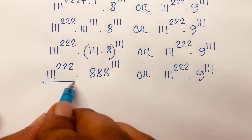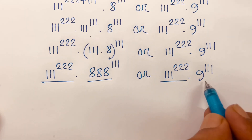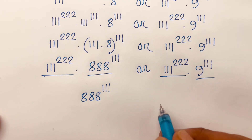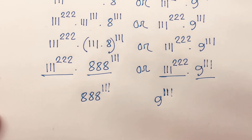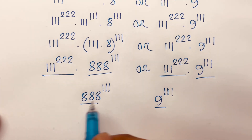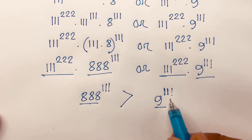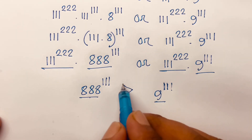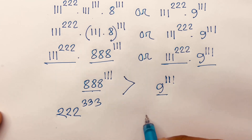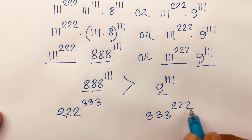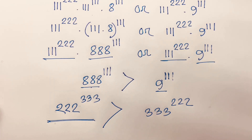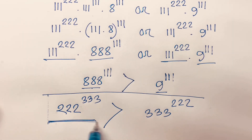These terms are the same, so now we compare 888^111 and 9^111. The exponents are equal but the bases are not — 888 is bigger, so 888^111 is larger. Therefore, our answer is that 222^333 is greater than 333^222. This is our final answer.